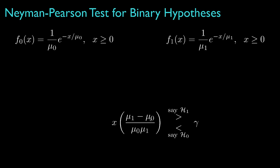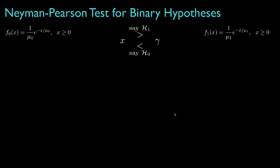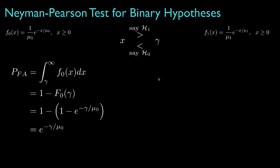Furthermore, if mu_1 is greater than mu_0, we can divide by the multiplicative term without changing the inequalities. Of course, if mu_1 is less than mu_0, we'd have to reverse the inequalities. For the case where mu_1 is greater than mu_0, the rule reduces to a simple comparison of the data with a threshold. From this test, we can define the false alarm and detection probabilities. The false alarm probability is the integral of the density for hypothesis 0 from the threshold to infinity, which for the exponential distribution equals e to the negative gamma divided by mu_0.